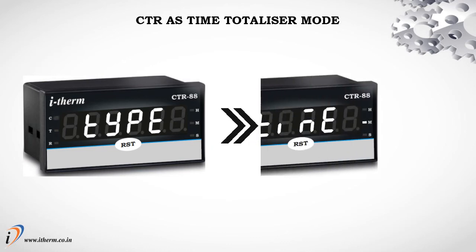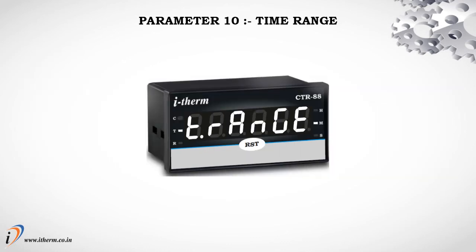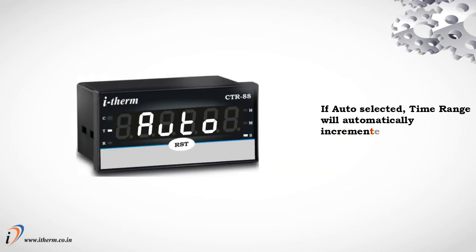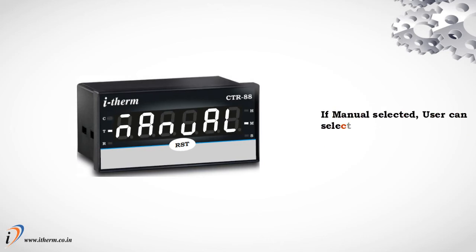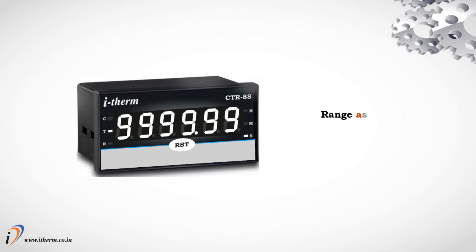CTR as time totalizer mode. Parameter 10: time range. If auto is selected, the time range will automatically increment with the increment in time. If manual is selected, the user can select a particular range for timing. Parameter 11: manual time range. This parameter will appear only if time range is selected as manual.